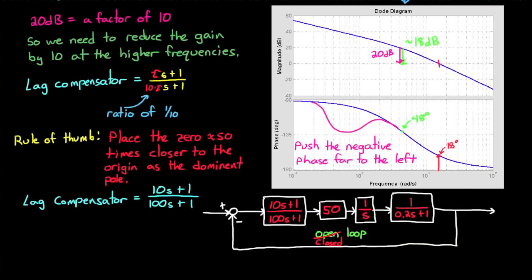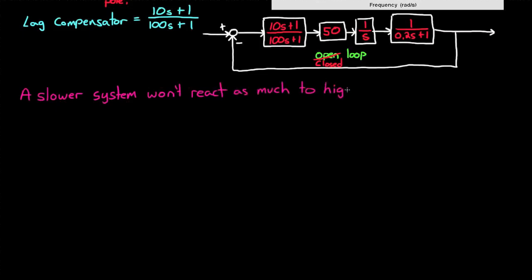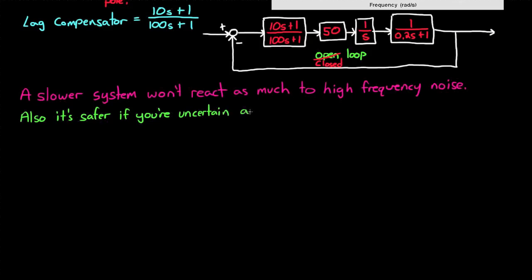So now you might be asking: why would we ever want to slow down our control system? Well, it depends on what your system is designed to do. If your system doesn't need to react very quickly, or you're not sending high-frequency commands to it, it's actually a better design to slow it down — because then it won't react to high-frequency noise as much, making it a less noisy system. Also, if your system has unknown or poorly modeled high-frequency modes, by slowing down the system that model uncertainty won't affect you. So all in all, both methods, lead and lag, have their benefits and drawbacks. By understanding them, it'll help you decide which method to use when designing your control system.